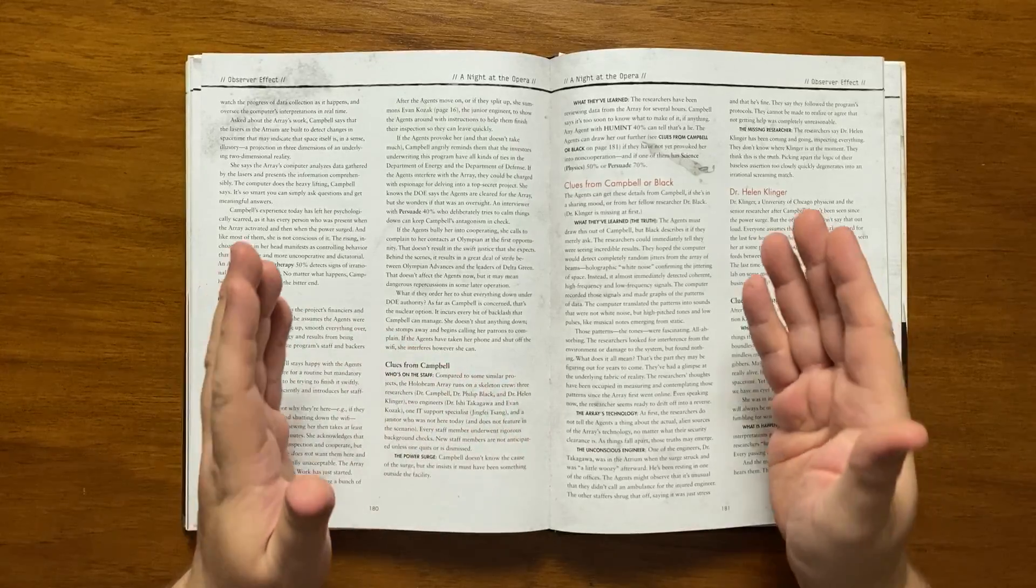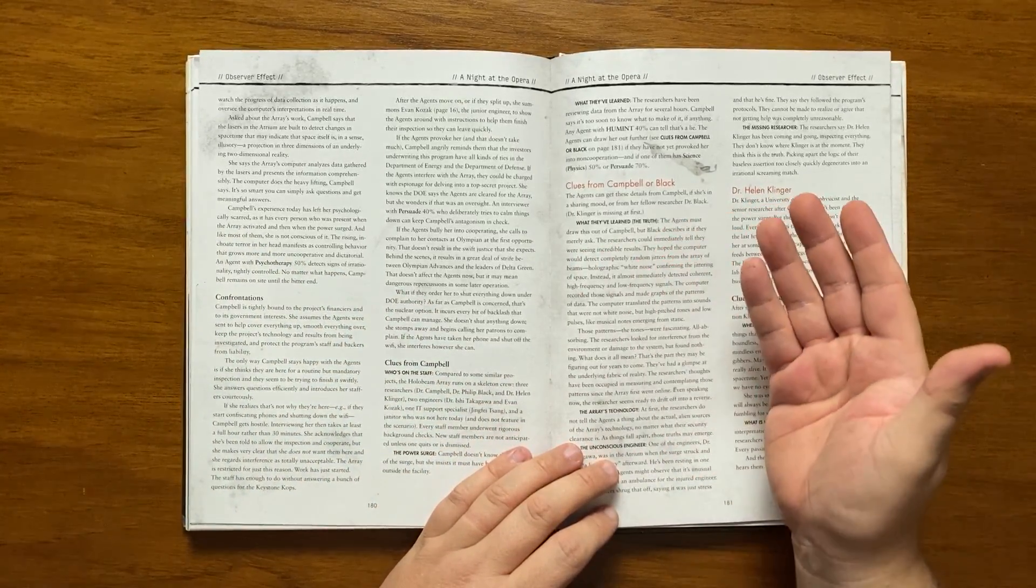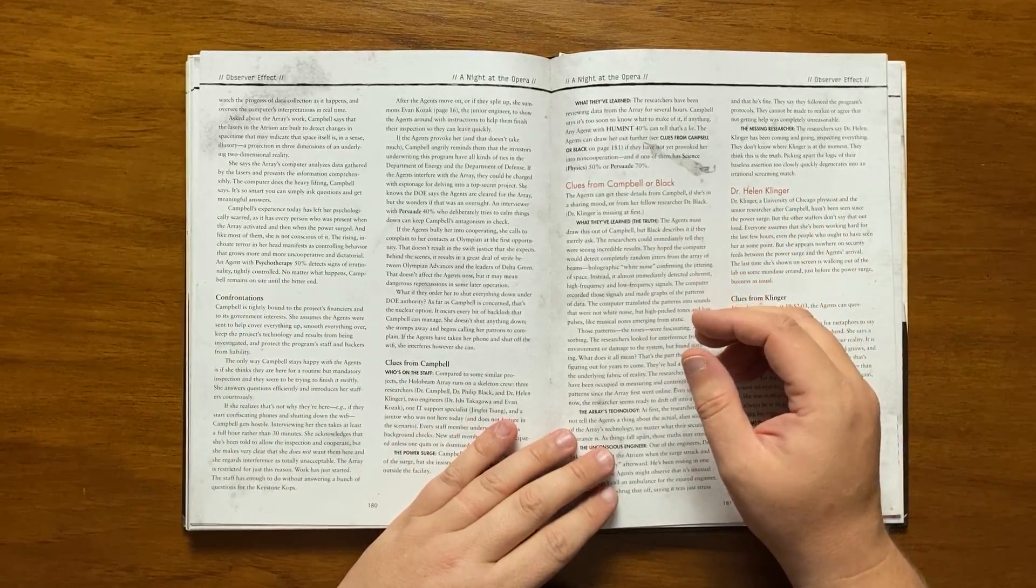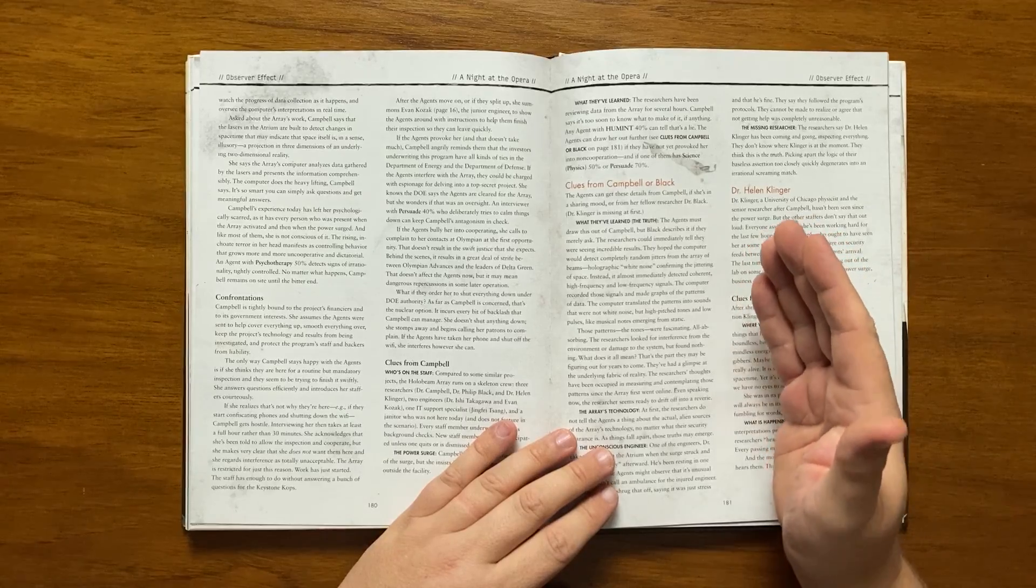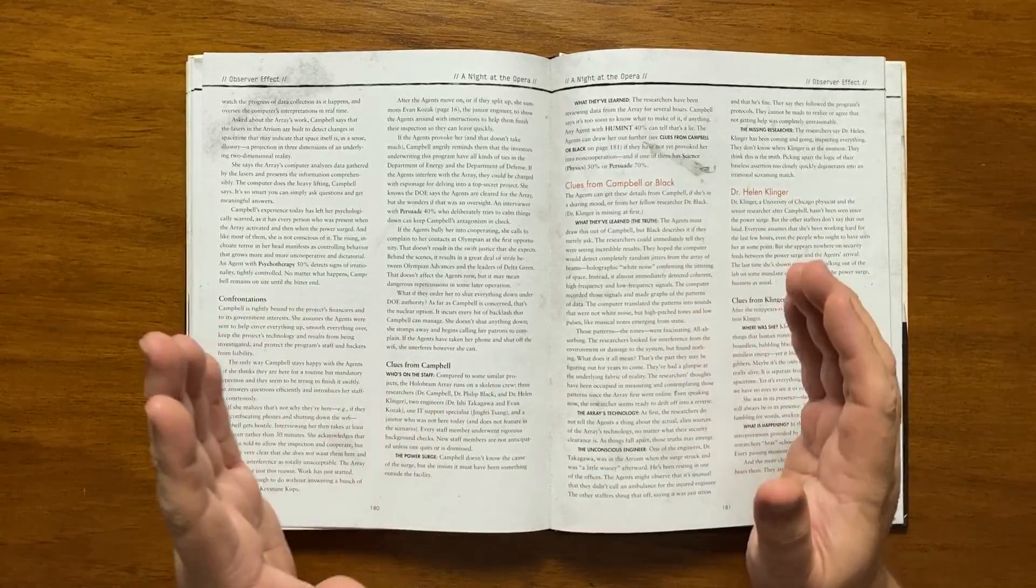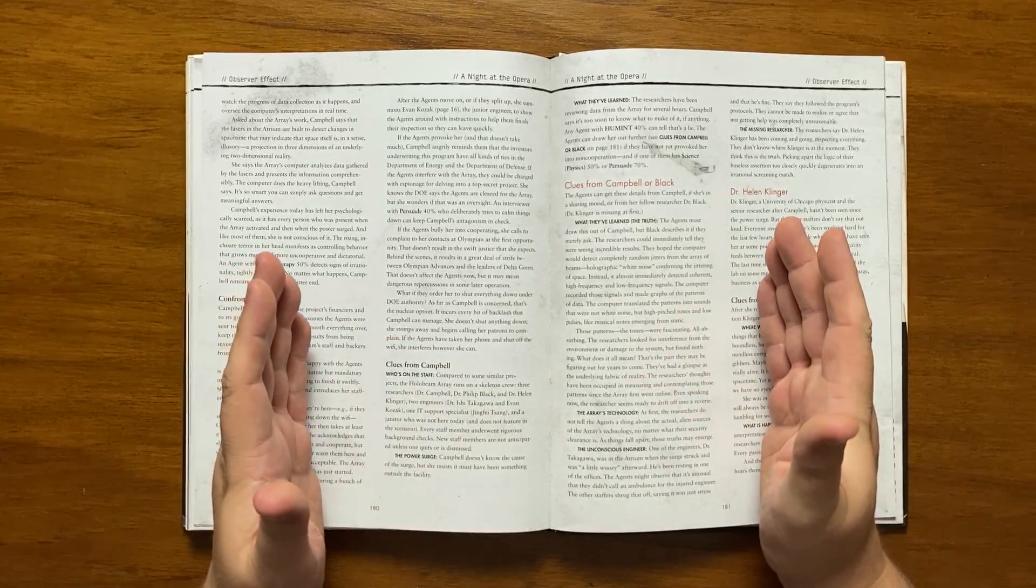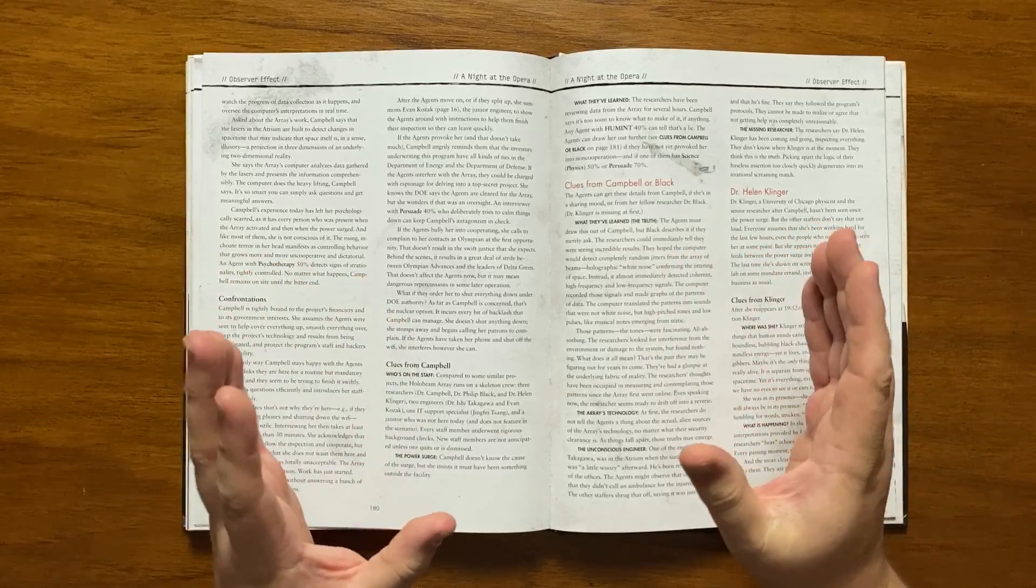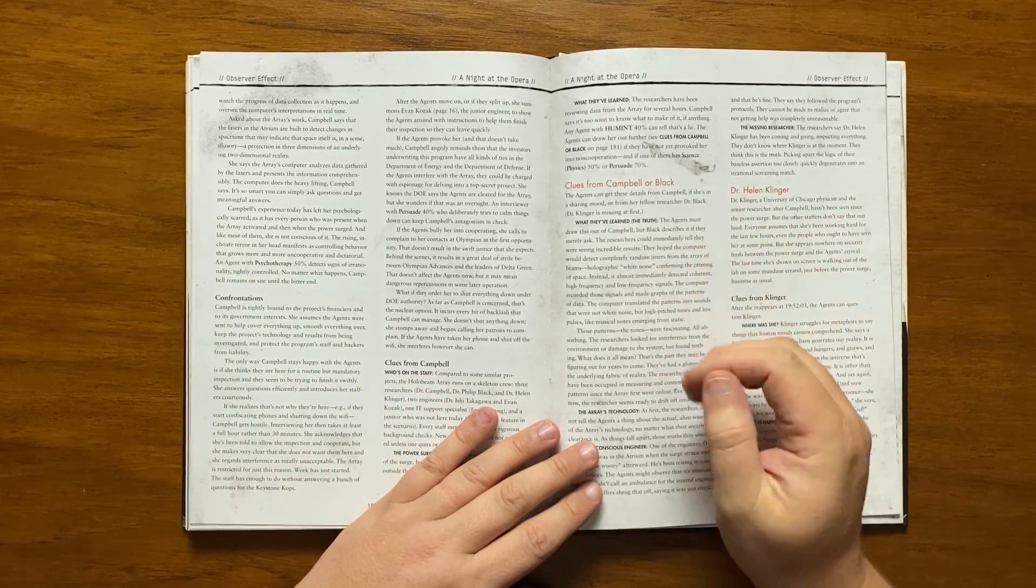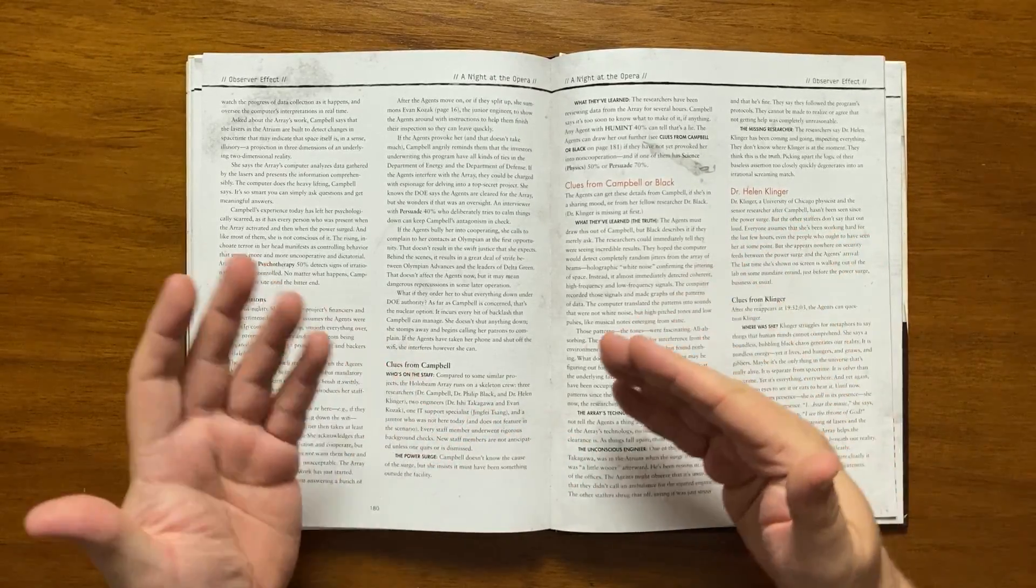All of the researchers were on hand for the Array's activation. If she is asked about the work they do here she will advise that the Array's lasers detect changes in space-time that may indicate that space itself is, in a sense, illusory. The Array's computers analyse the data and present it in an understandable fashion. She will tell them that the computer is so smart that you can ask it a question and get a meaningful answer. Though Campbell is unaware she is emotionally scarred with the rising terror manifesting as controlling behaviour. She assumes the agents were sent to cover everything up and keep the technology from being investigated. She will only be happy while she thinks that they are here for a routine inspection. Once she understands that they are not here for that reason she gets hostile considering the interference is totally unacceptable.